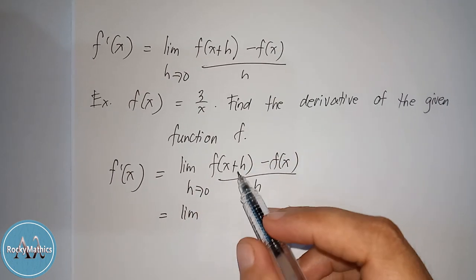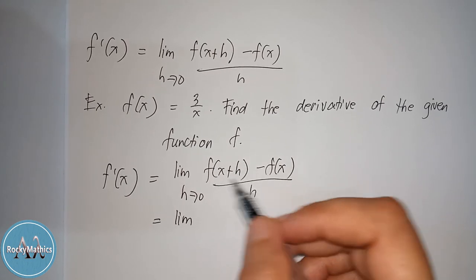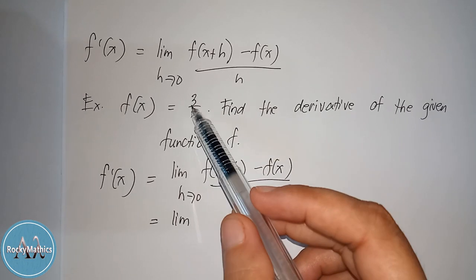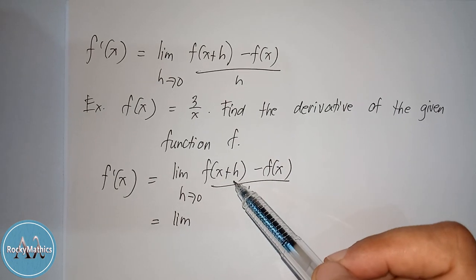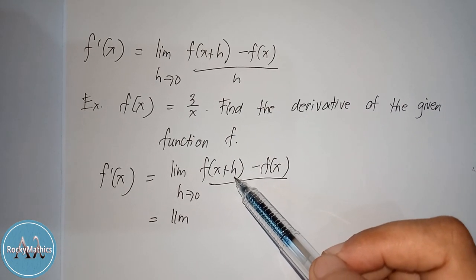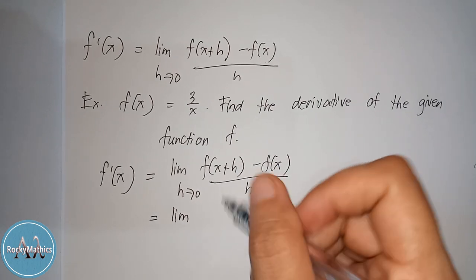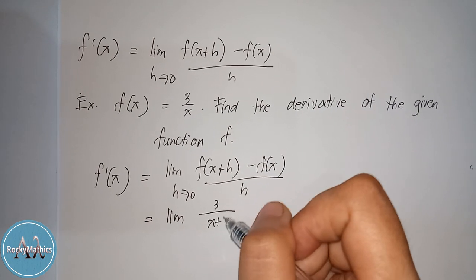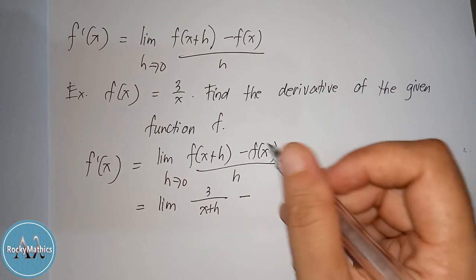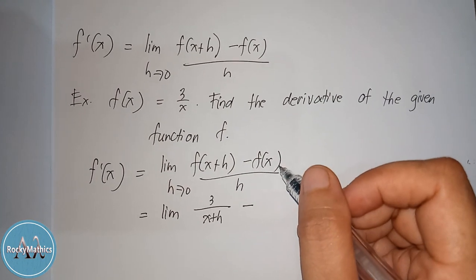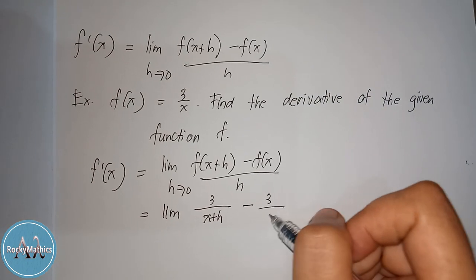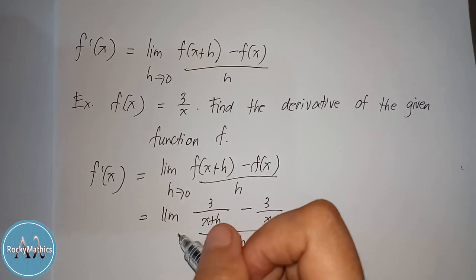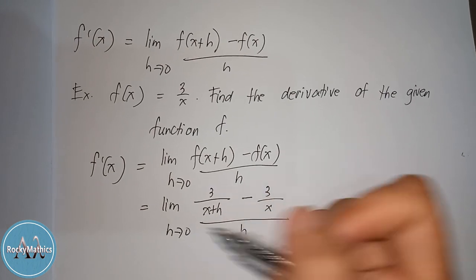So the limit — what is f of x plus h? This means that the variable x in the given function f will be replaced by x plus h. So f of x plus h becomes 3 over x plus h. Minus f of x — what is f of x here? The f of x is 3 over x. So you just copy 3 over x, and then as h approaches 0.